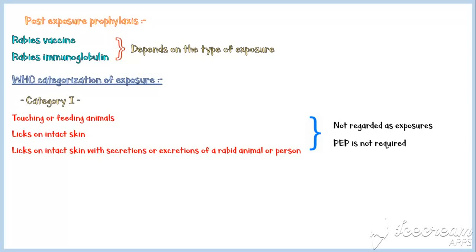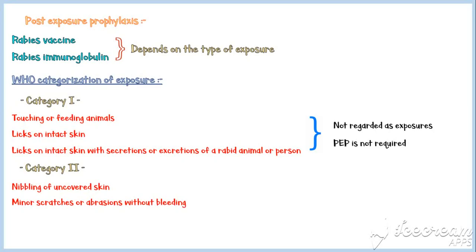Category 2 includes nibbling of uncovered skin and minor scratches or abrasions without bleeding. In these instances, rabies vaccine should be injected as soon as possible.